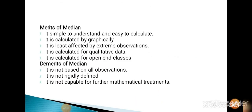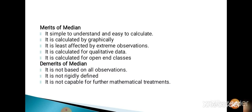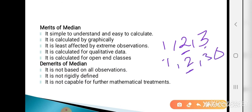Now the merits and demerits of median. Merits: First, it is simple to understand and easy to calculate. Second, it can be calculated graphically using the Ogive curve. Third, it is least affected by extreme observations because it depends only on the middlemost value — for example, in data 1, 2, 30, the median is still 2. Fourth, it can be calculated for qualitative data and open-end classes.